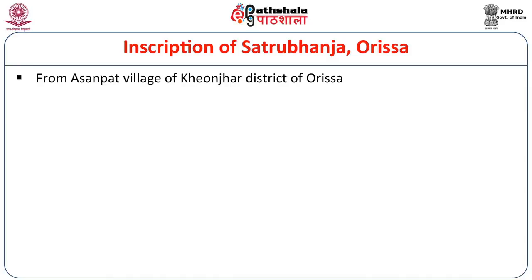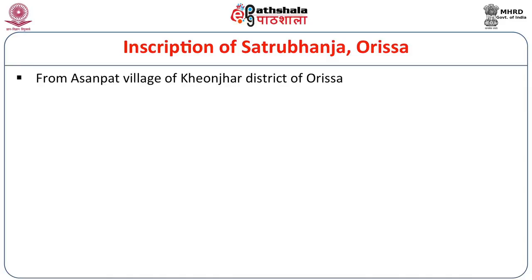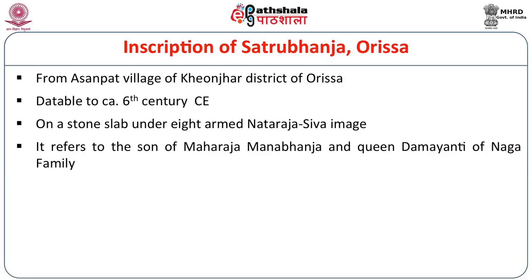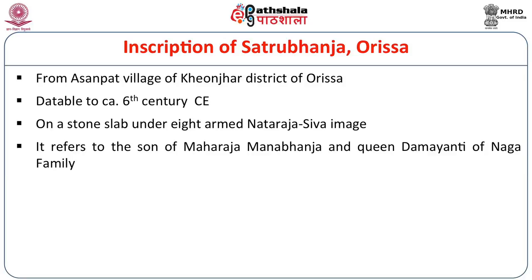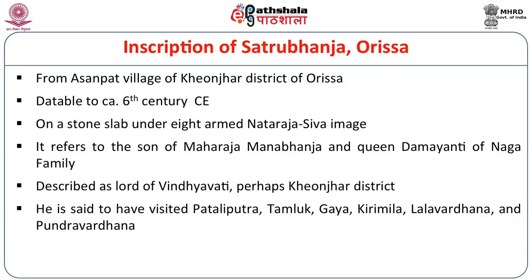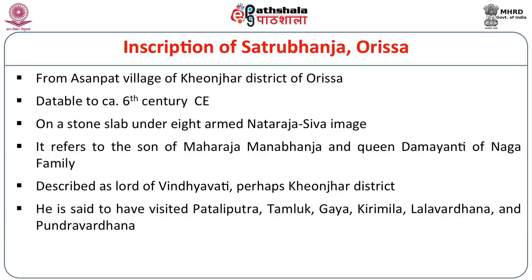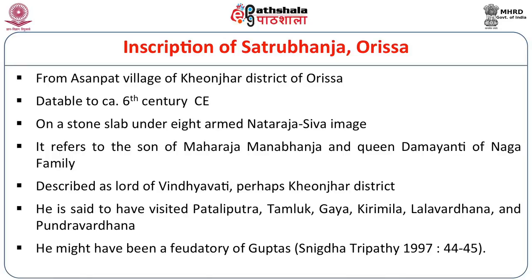That is why inscriptions are very important for understanding political history. Another inscription is the Saturbanja inscription from Orissa, found in Asanpat village of Keonjar district, datable to the 6th century CE. It is engraved on a stone slab under an eight-armed Nataraja Shiva image. It refers to the son of Maharaja Manabhanja and Queen Damiyanti of the Naga family, described as Lord of Vindyavadi — perhaps referring to Keonjar district. He is said to have visited Pataliputra, Tamluk, Gaya, Grimila, Lala Vardana, and Pundra Vardana, and he might have been a feudatory of the Guptas.